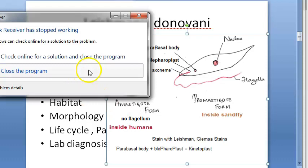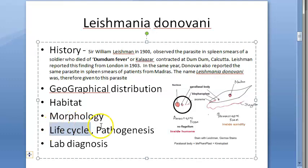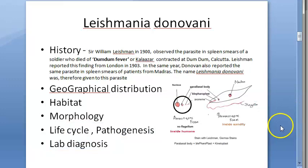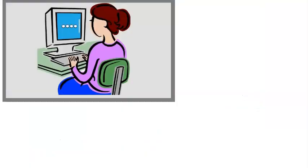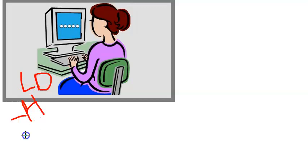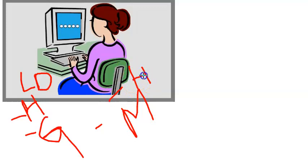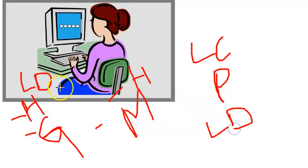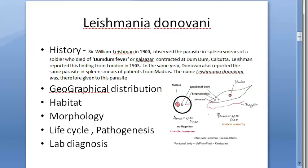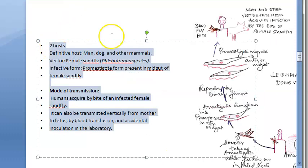We are done with the morphology of Leishmania donovani. Now we move on to the life cycle, pathogenesis, and lab diagnosis. To recap so far: we have looked at Leishmania donovani which causes visceral leishmaniasis; we have seen its history, geographical distribution, morphology, and habitat. Now we go to the life cycle and pathogenesis, followed by lab diagnosis.